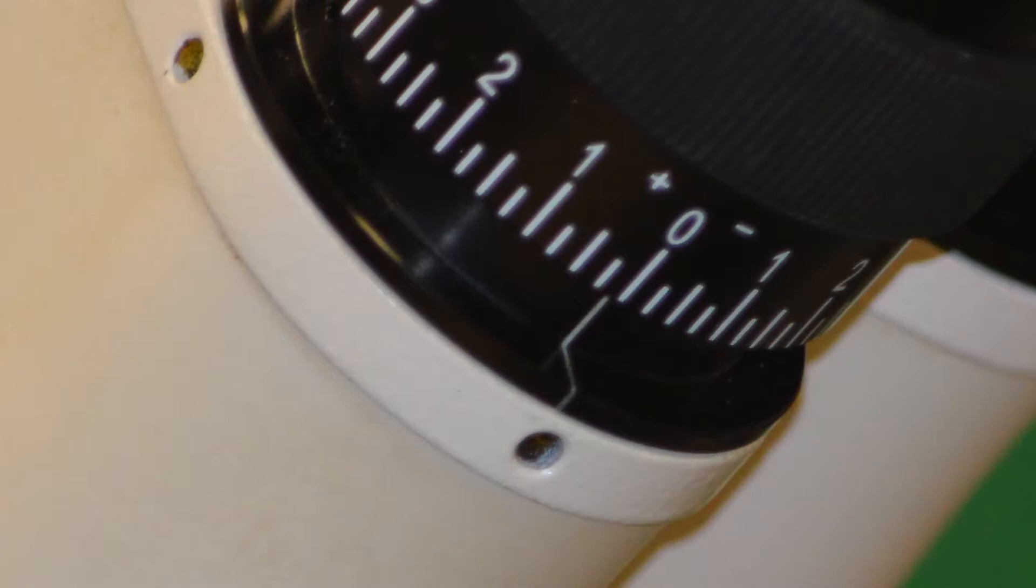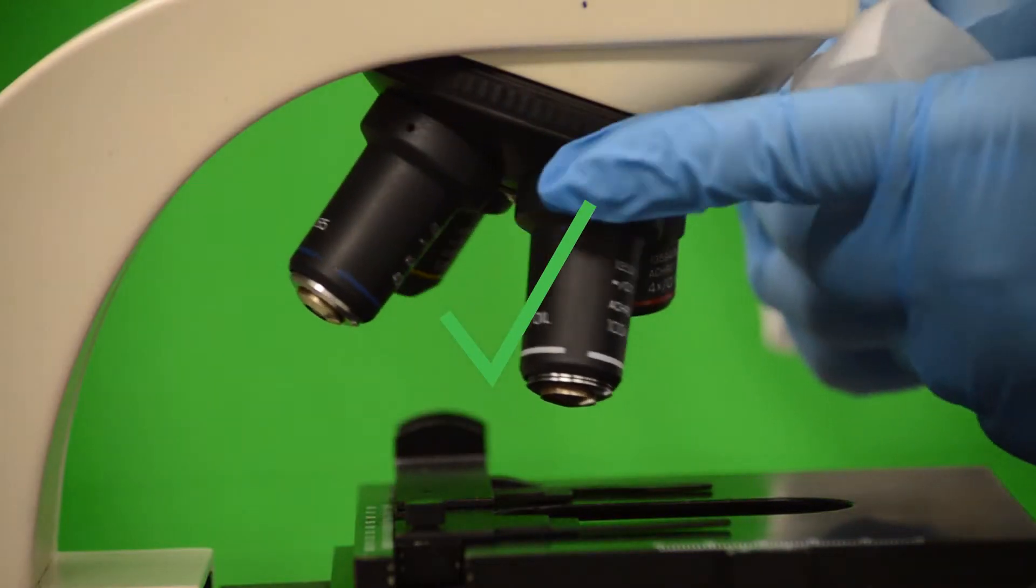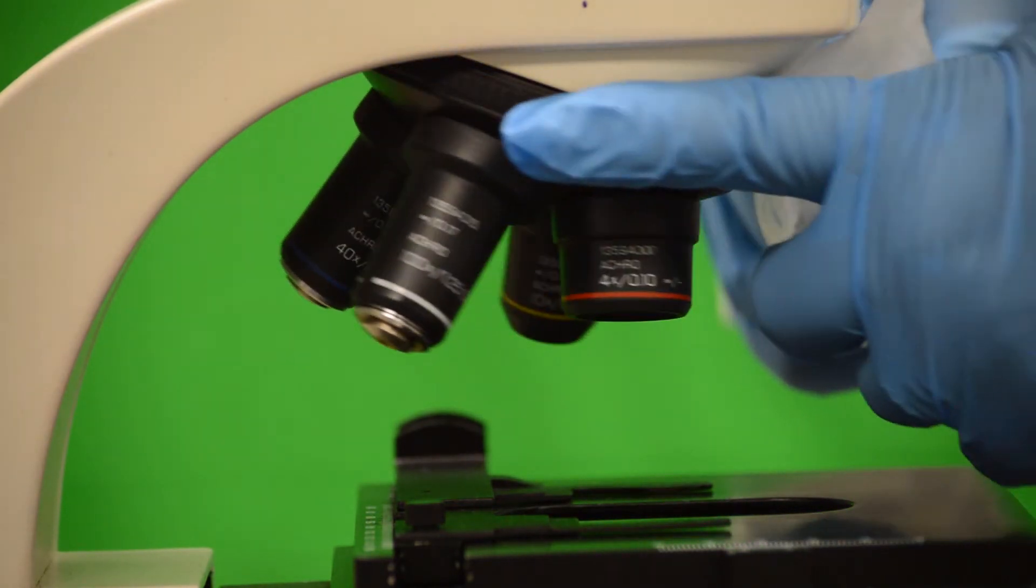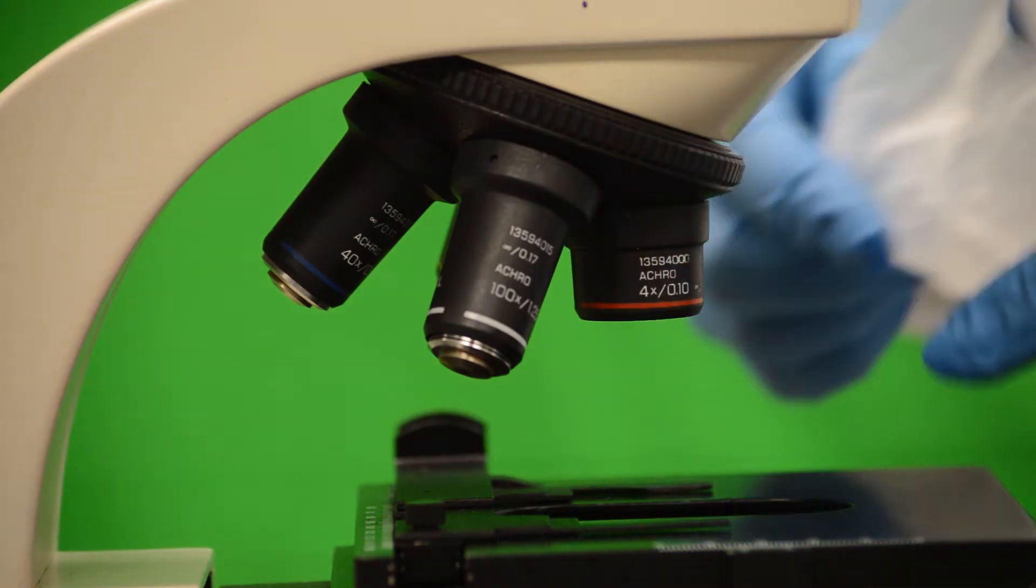Set the vernier in the zero position. Make sure you move the objective by rotating the ring. Do not grab the objective to do this. You may damage the lens or the scope.